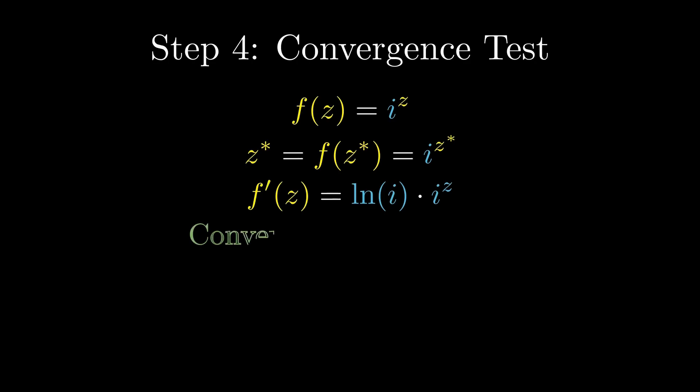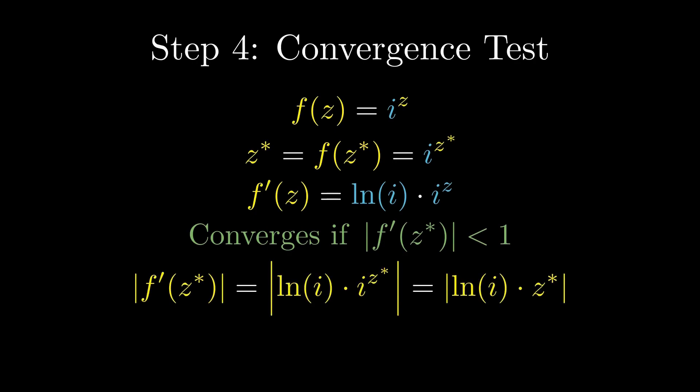The key rule is simple: The iteration converges if the magnitude of f prime evaluated at z star is less than 1.